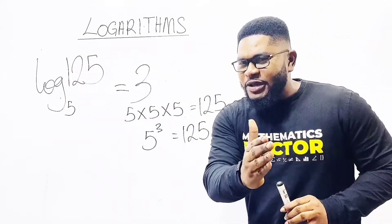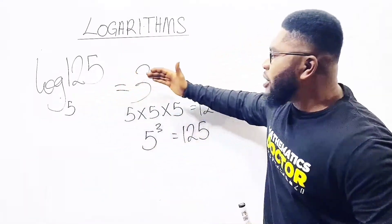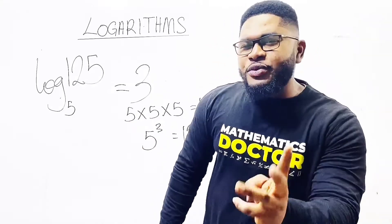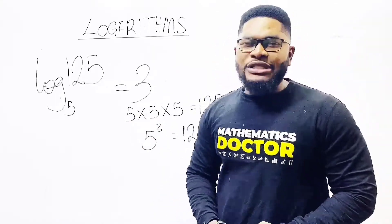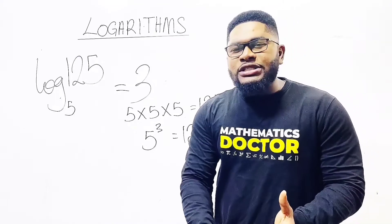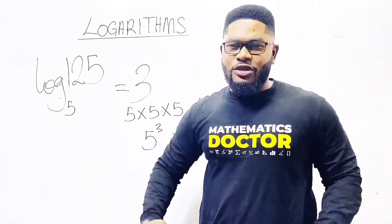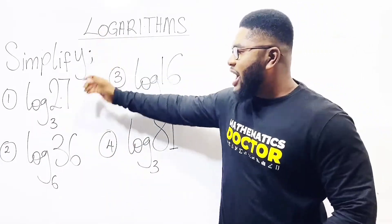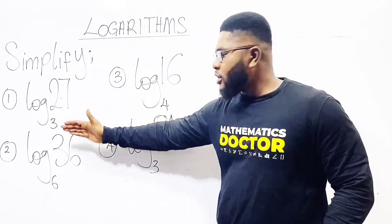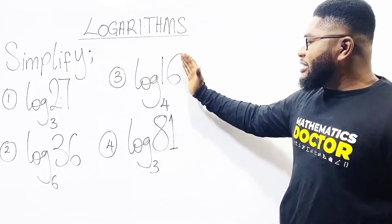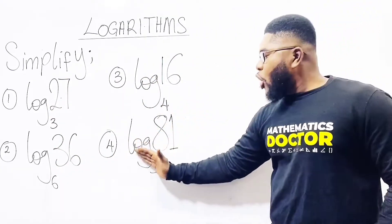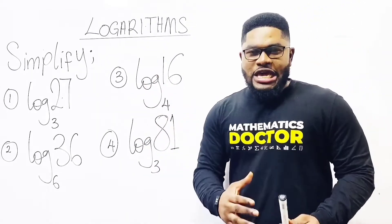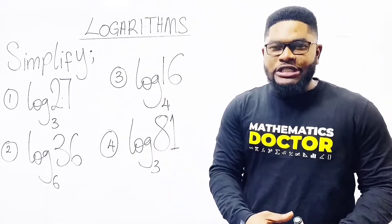That is it. Now let me give you 4 practice questions. Solve them and leave your answers in the comment section, while I explain the laws and properties of logarithms to solve a complete question with you. The questions are: simplify log 27 base 3, log 36 base 6, log 16 base 4, and finally log 81 base 3. Get the final answers for these logarithms — then I will take one question and solve it for you, and you do the rest on your own.